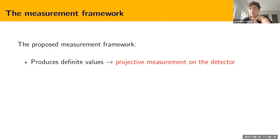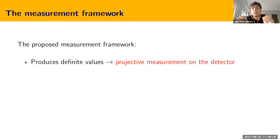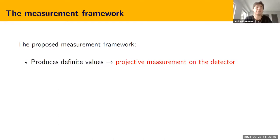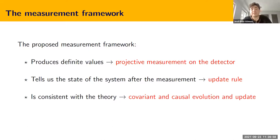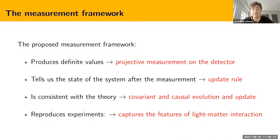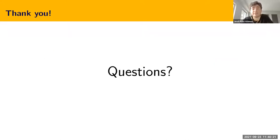To finish, I want to wrap up all the content. I have presented all the features of our measurement framework and want to argue that it has fulfilled the conditions stated at the beginning. First, it produces definite values, because we perform a projective measurement on the detector and get S or R — a definite result we can write down. Second, it tells us the state of the system after measurement, because we have provided an update rule. Third, it is consistent with the theory, because the evolution is covariant and causal. And finally, it reproduces experiments, because it captures the features of light-matter interaction under certain conditions. Thank you very much for your attention.